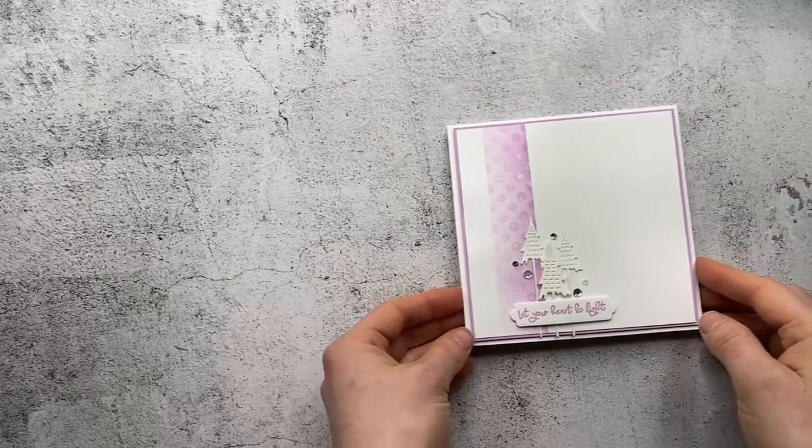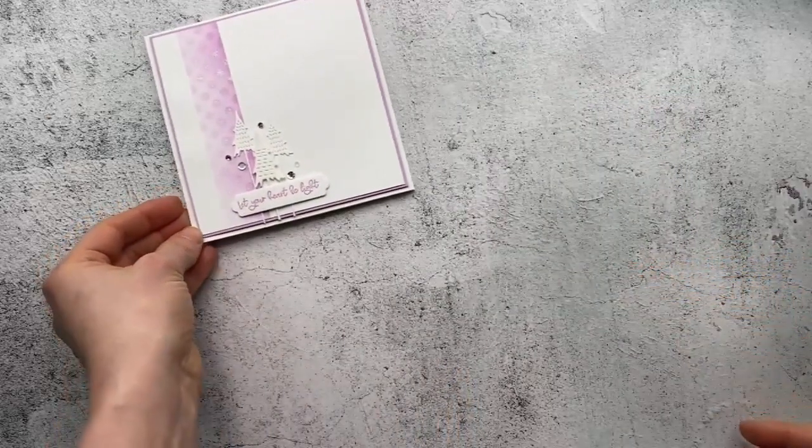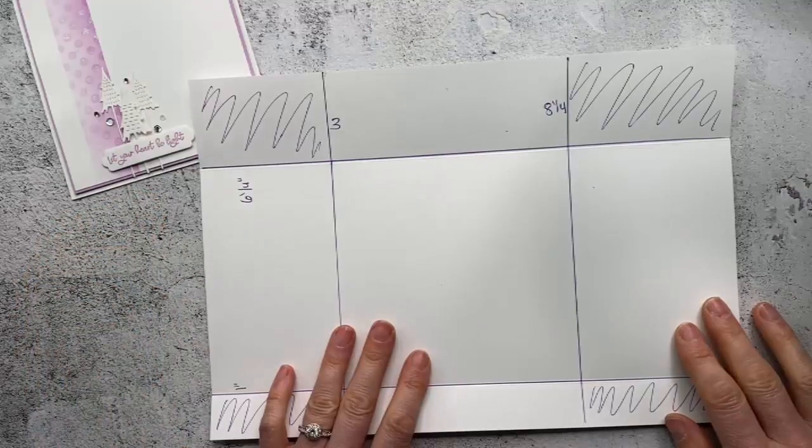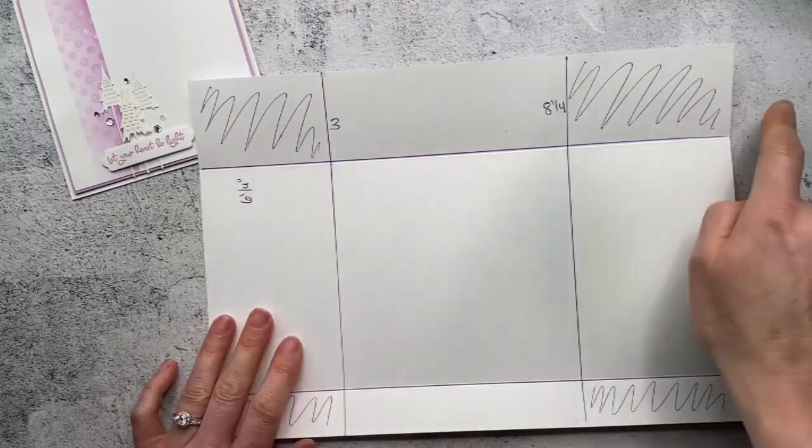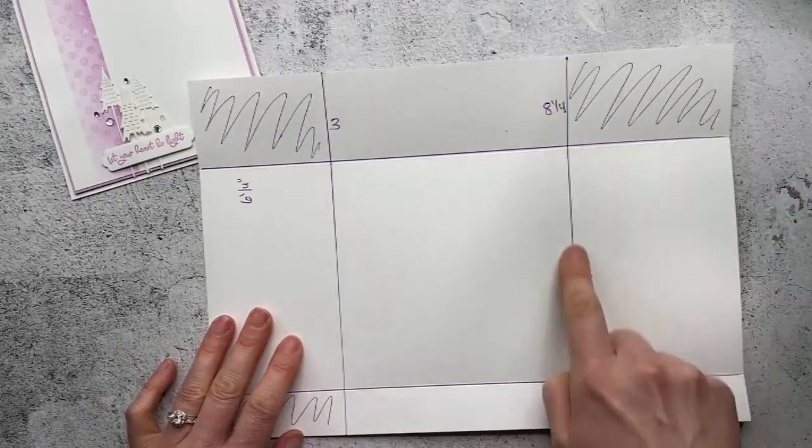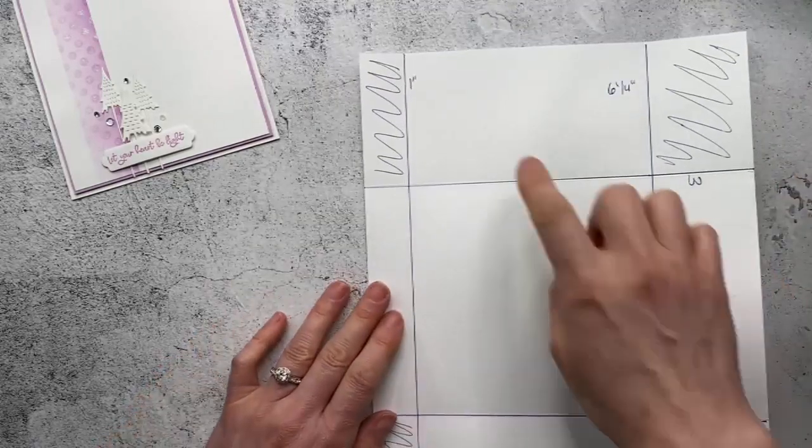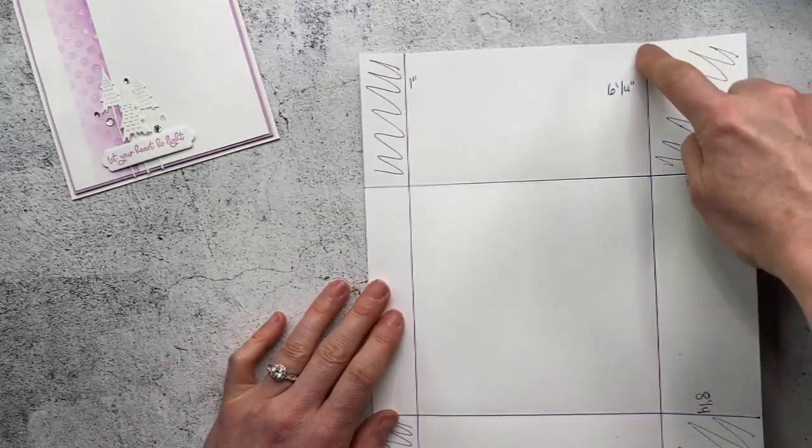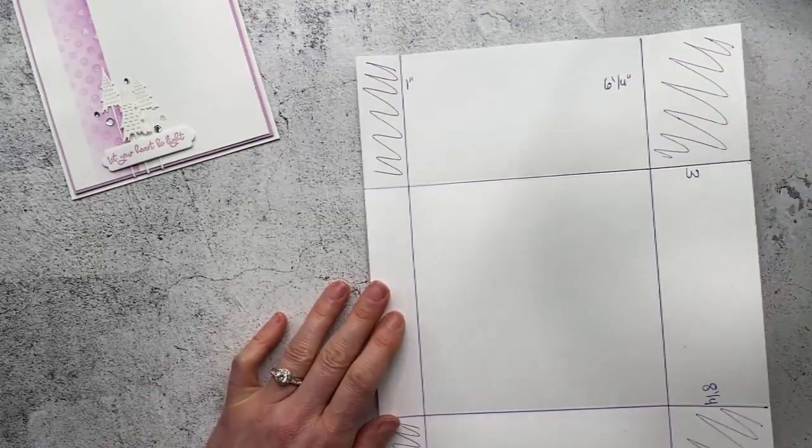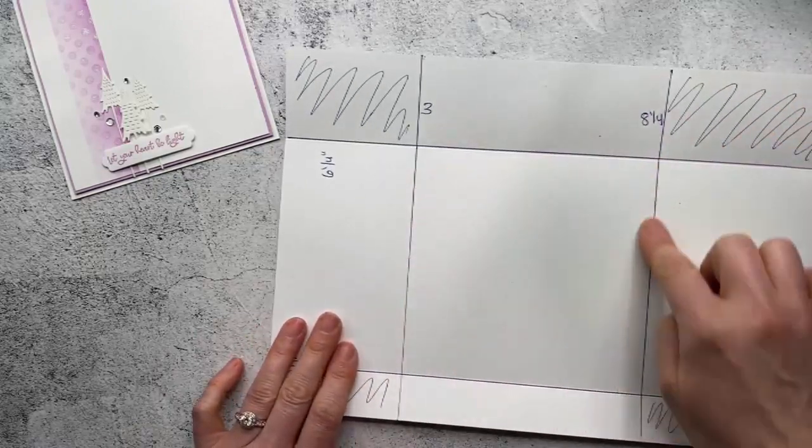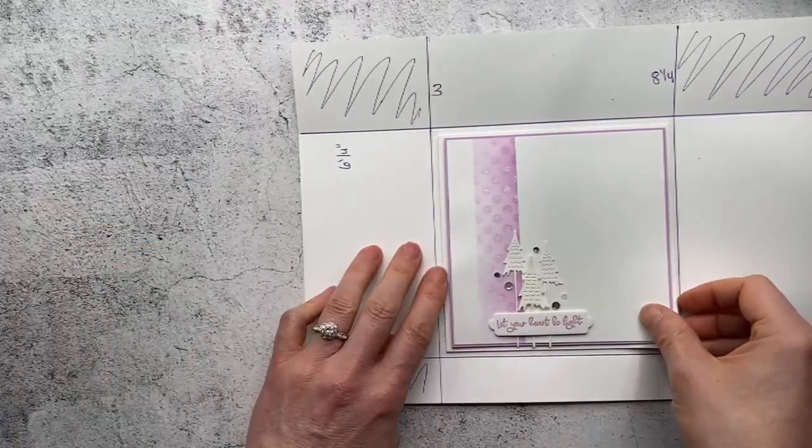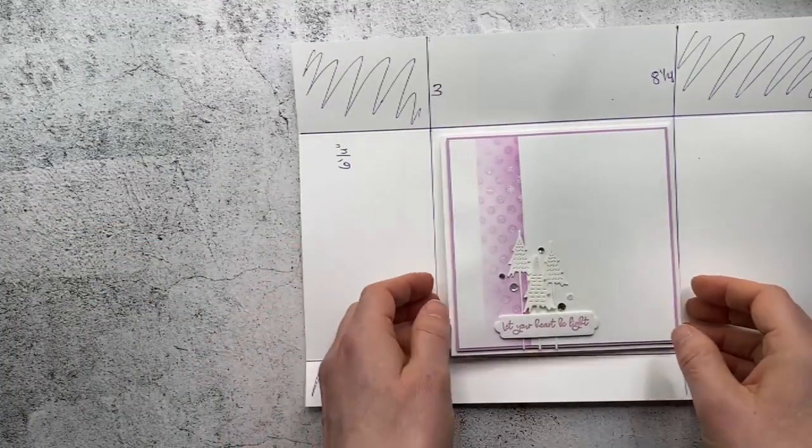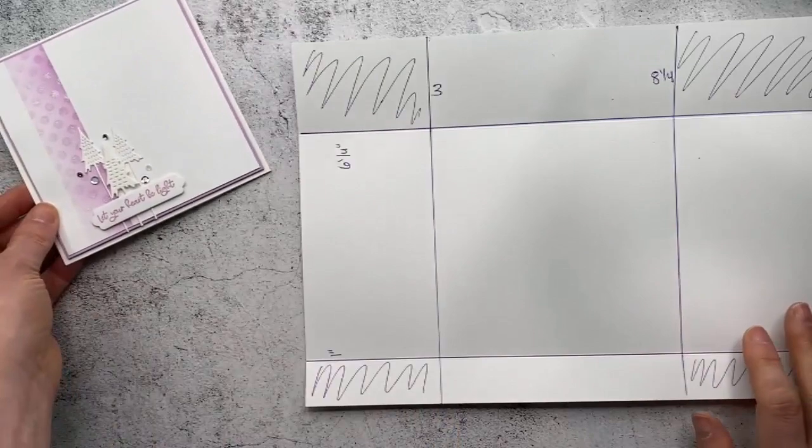I want to show you how you can make an envelope for this card to match. So I have here just a sheet of A4 paper and along the long side I've scored it at three inches and eight and a quarter inches and then I've rotated this way and I've scored it at one inch and six and a quarter inches and that leaves us a square in the middle that is five and a quarter inches square. Now our card is five inches so that gives you just that little bit of breathing room for layers so your card doesn't get too squished.